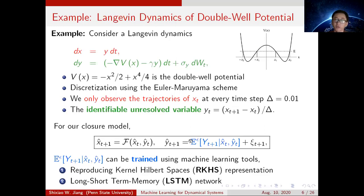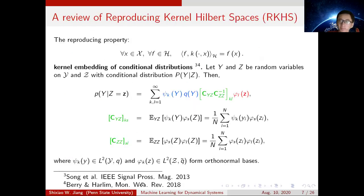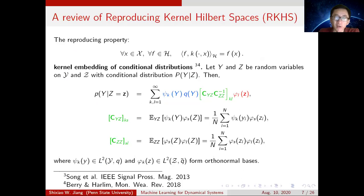For our closure model, we need to train this conditional expectation Epsilon based on X(T) and Y(T). We consider using two machine learning tools: one is called RKHS representation, and another is called LSTM network. For the RKHS representation, any function F in the RKHS space has a kernel K such that the inner product between F and K equals the function F itself.